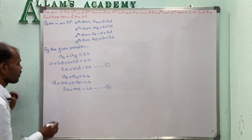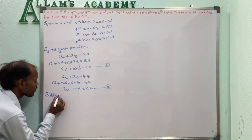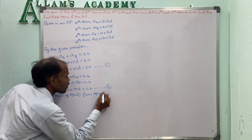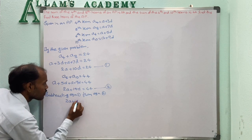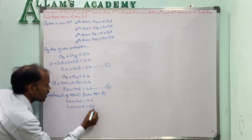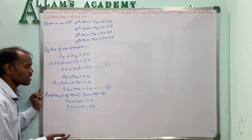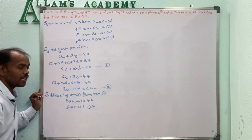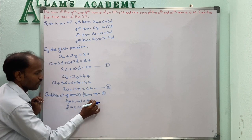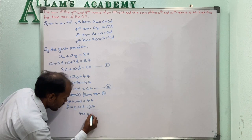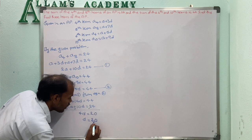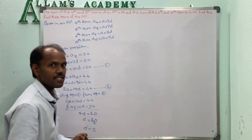Subtracting equation 1 from equation 2: (2A + 14D) - (2A + 10D) = 44 - 24. The 2A terms cancel. 14D - 10D equals 4D, and 44 - 24 equals 20. So 4D = 20, giving D = 20 divided by 4 equals 5. The common difference is 5.